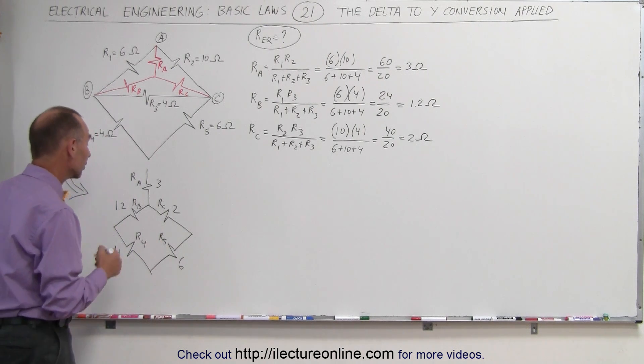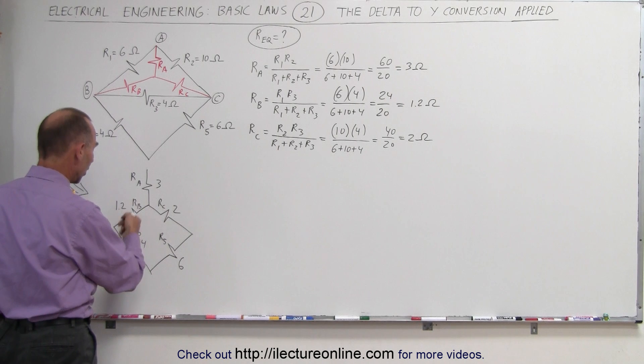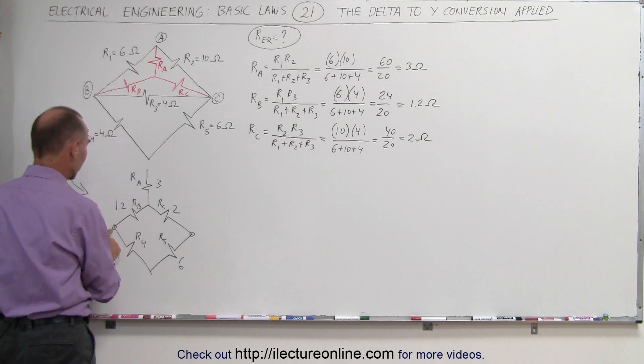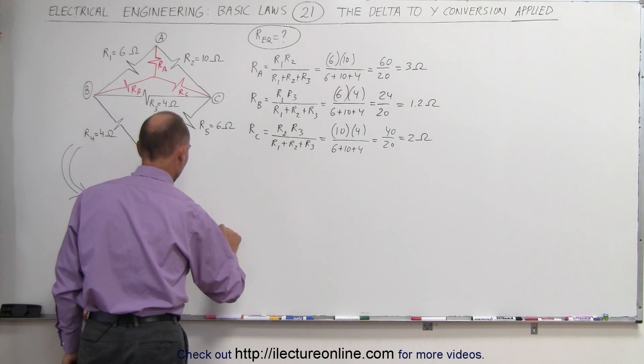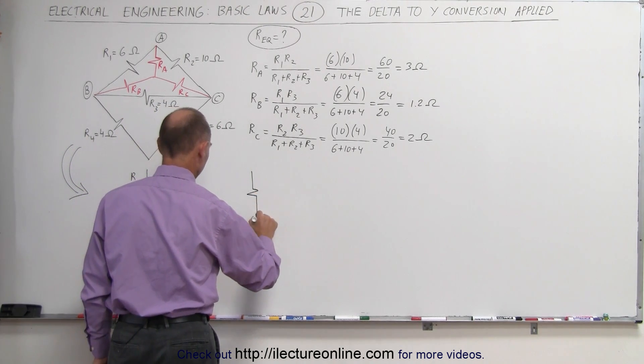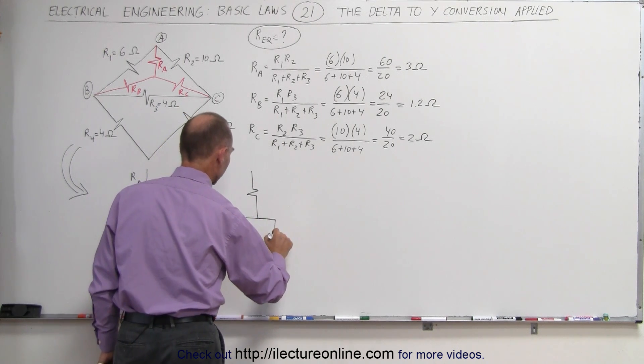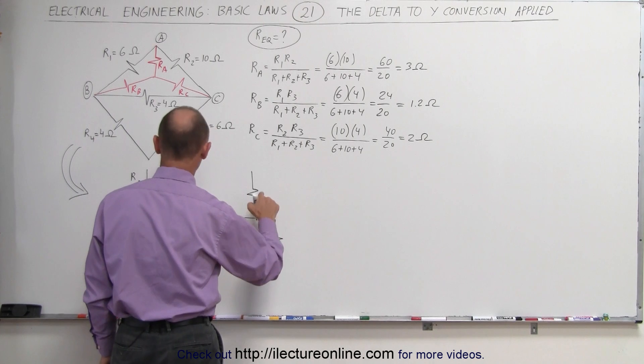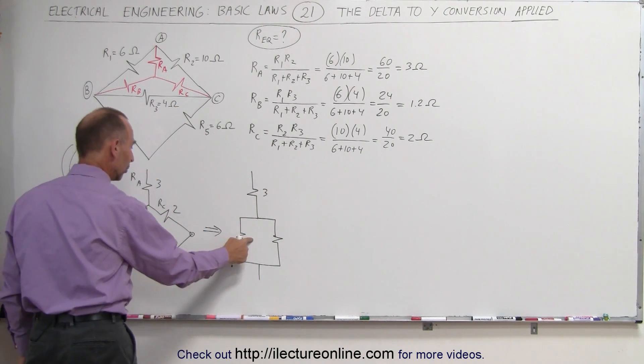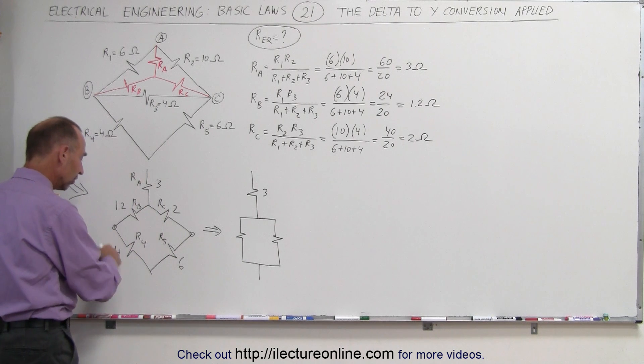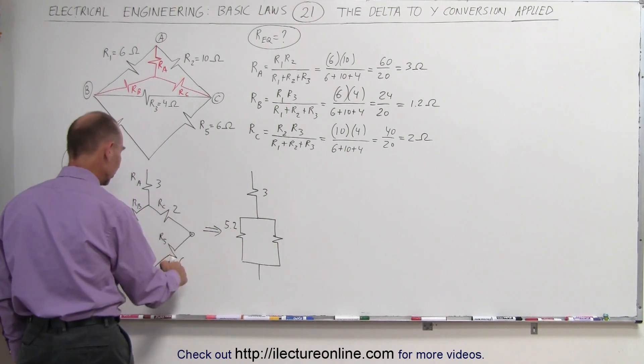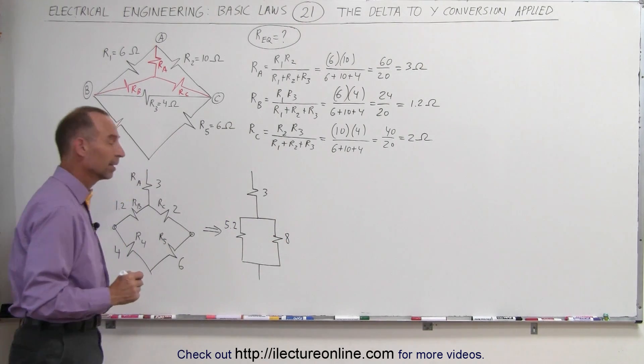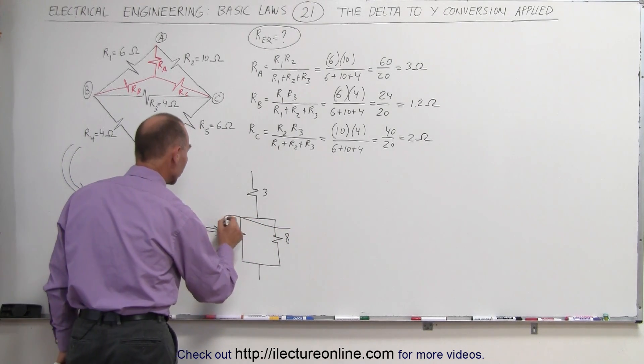Now, this is a circuit that is easily solved with traditional methods. Notice that RB and R4 are in series. RC and R5 are in series because each of those two pairs share a single node that's not shared by any other resistor. So this can now be written as the following circuit. Combine those two. Combine those two. This is still your 3 ohm resistor. But this will be the sum of 1.2 plus 4. Since they're in series, we simply add the two resistors together. That's 5.2 ohms for that resistor. And 2 plus 6, which is 8 ohms for that resistor.